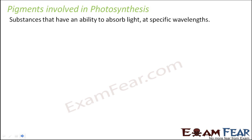What are pigments? Pigments are those substances that have an ability to absorb light at specific wavelengths. Chlorophyll is an example of a substance which is present inside a plant and it has the ability to absorb light at specific wavelengths. Even in visible light alone, each component of light has different wavelengths — the difference in wavelength between red light and blue light is quite huge. Substances which have the ability to absorb light of specific wavelengths are known as pigments.